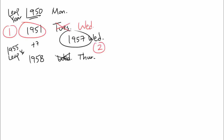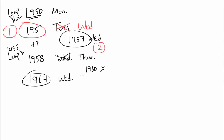Adding 7 to 1957, we'd expect 1964 to be Wednesday. And indeed it is, because 1960 is not a leap year, so it doesn't contribute an extra day. So 1964 is Wednesday — that's three.